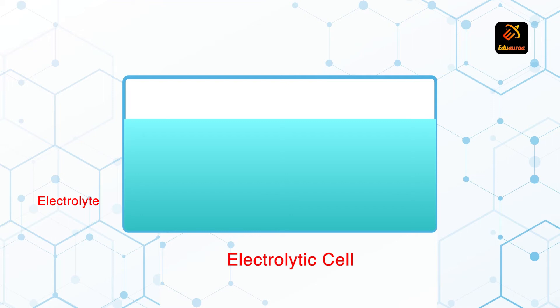Apart from that, there are two electrodes. Electrodes are rods, and these rods help in the migration of ions. One rod is called cathode.